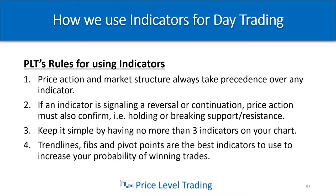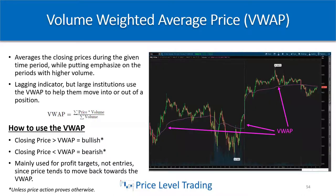Number four: trend lines, Fibonacci retracements, and pivot points are the best indicators to use to increase your probability of winning trades. Number five: see rules one through four. First, let's talk about the VWAP — the Volume Weighted Average Price. The VWAP averages the closing prices during a given time period while putting emphasis on periods with higher volume.